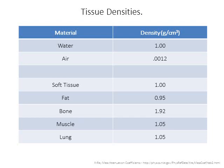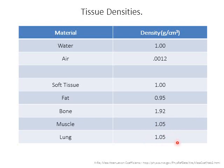Regarding tissue densities: the body has a density approximately that of water, 1 gram per cubic centimeter. Air is much lighter at 0.0012 g/cm³. Fat has a lower density than water; muscle has a higher density than water; bone is significantly higher — nearly double the density. Lung is approximately the same as muscle, remembering that lung contains not just air but structures like pulmonary vasculature and great vessels.